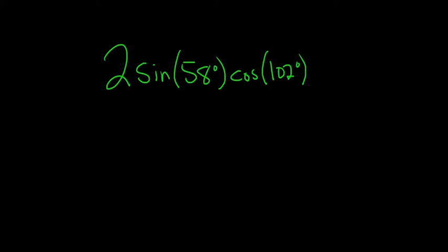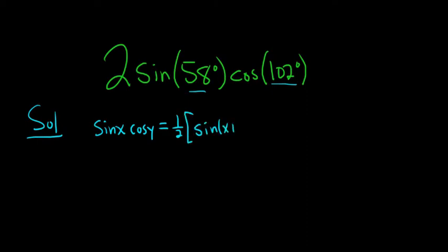Write as a sum or difference of trig functions or values. Solution. So in this problem, we have a sine and a cosine, and the angles are different. So the formula we'll use is sine x cosine y is equal to one-half bracket sine of x plus y plus sine of x minus y.